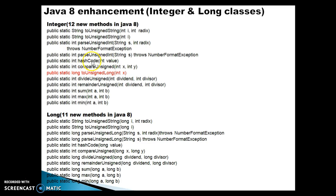Next is hashCode. There was already a hashCode method until Java 7, but Java 8 added another one. When you pass any integer, this returns the corresponding hash code value. Every object has an identifier called a hash code, which you can think of as a memory address. Next is compareUnsigned, where you pass two positive numbers. If the first number is greater than the second, it returns 1; if less, it returns -1; and if both are equal, it returns 0. This works like a Comparator.